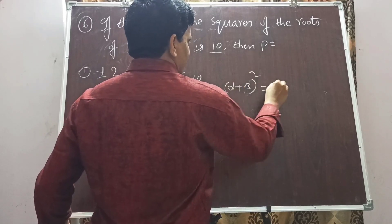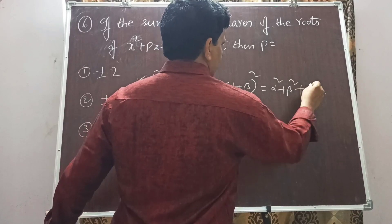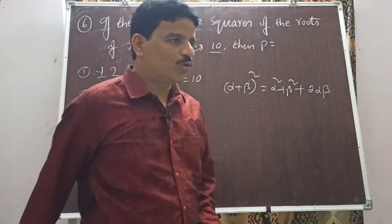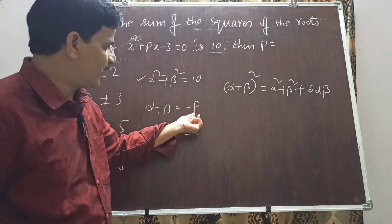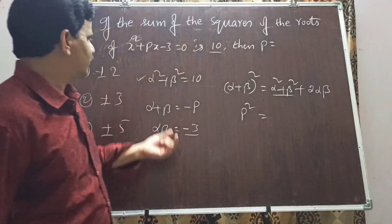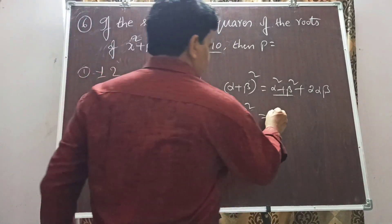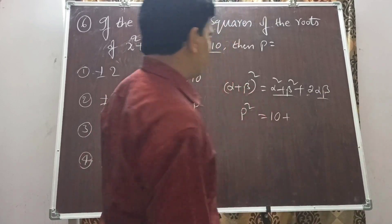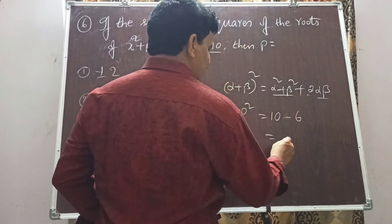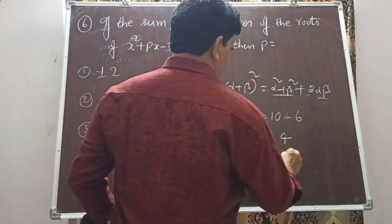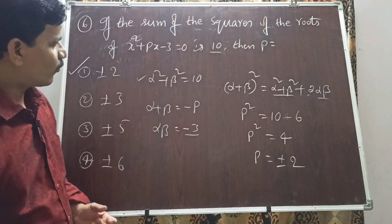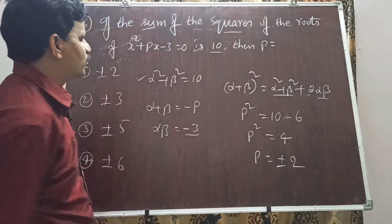Using the formula: (alpha + beta)² = alpha² + beta² + 2·alpha·beta. Substituting: (-p)² = 10 + 2×(-3), so p² = 10 - 6 = 4, therefore p = ±2. Option 1, p = ±2, is the right answer.